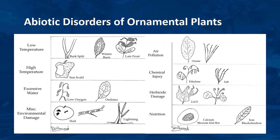Abiotic literally means without life. Abiotic plant disorders are non-biological factors usually associated with the plant's environment that affect plants adversely. These environmental factors include extreme temperatures, strong winds, too much or too little moisture, high or low soil pH, poor air quality, too much or too little light, and nutritional problems. If one or more of these factors goes above or below the optimum range for a given plant species, plant growth might be abnormal or adversely affected. Abiotic disorders may also be caused by human activities such as pesticide and fertilizer applications.